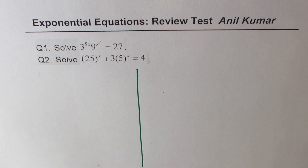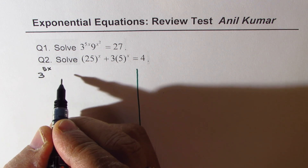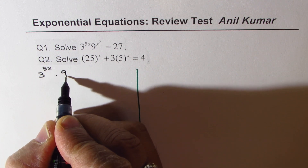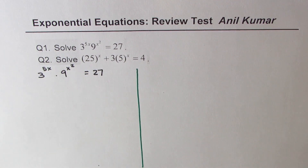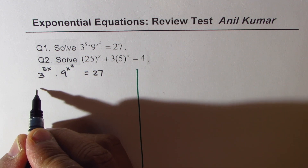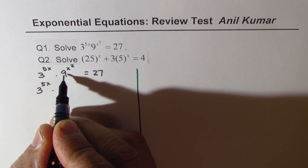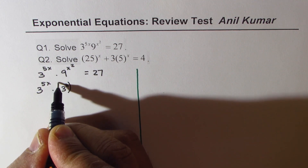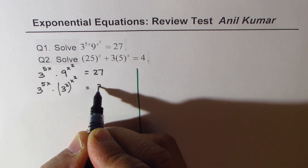I will provide both the solutions here. Let's begin with the first one: 3 to the power of 5x times 9 to the power of x squared equals 27. We could write all these bases in the form of exponents of 3 — that is the first step. So we could write this as 3 to the power of 5x times 3 squared to the power of x squared, and 27 is 3 cubed.